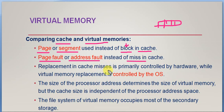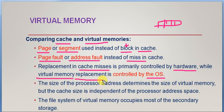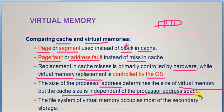Replacement on cache misses is primarily controlled by hardware in cache memory, but in virtual memory it is handled by the operating system using a replacement strategy. The size of the processor address determines the size of virtual memory, but cache size is independent of the processor address space. The file system supporting virtual memory resides in secondary storage and must be stored permanently there.